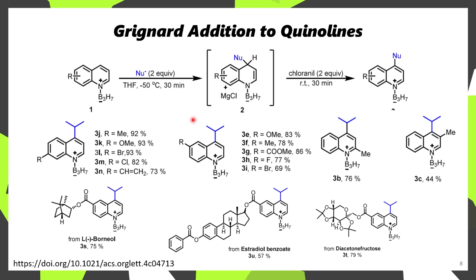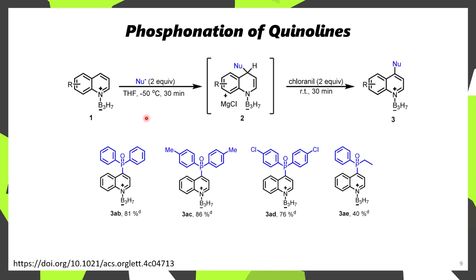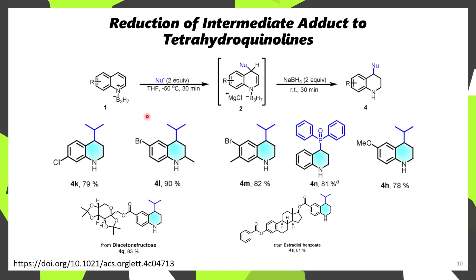In this case, Grignard reagents could be used on a wide range of substituted quinolines, which provided access to a variety of isopropylated products. Instead of just using Grignard reagents, phosphine oxides could be used, affording a range of trisubstituted phosphine oxides. They also demonstrated that the corresponding adduct, instead of undergoing oxidation, could be reduced with sodium borohydride to afford the corresponding tetrahydroquinolines. This worked not only for the Grignard-substituted products but also the phosphine oxide-substituted product.